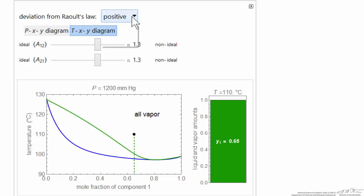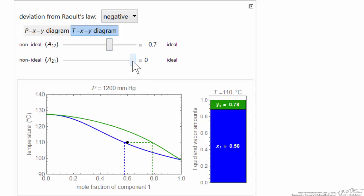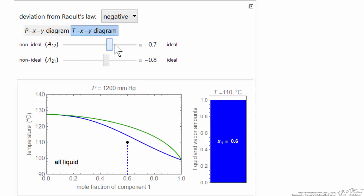I can also look at negative deviation from Raoult's law, so now we're back to ideal. Negative deviations, and again if I make the deviations large enough, so now the activity coefficients are significantly less than one but greater than zero, I get an azeotrope forming.